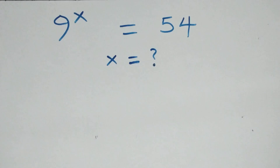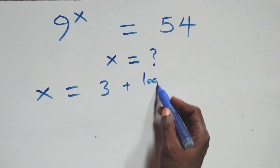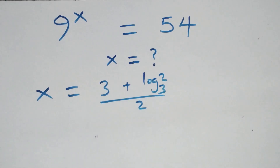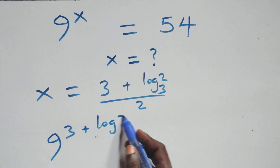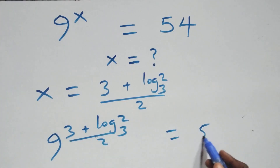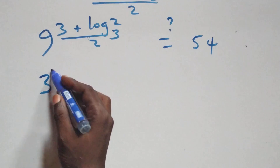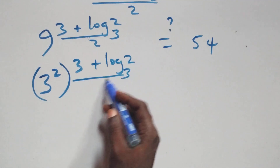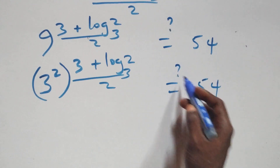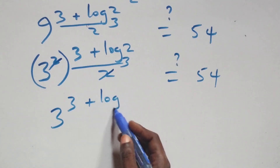The value of x is 3 plus log 2 base 3, all over 2. Then what we have becomes 9 raised to the power of (3 plus log 2 base 3) all over 2, and we check if this equals 54. We can rewrite as 3 squared raised to that power, giving 3 raised to power (3 plus log 2 base 3) all over 2, and the squared and the over-2 cancel each other, leaving 3 raised to power (3 plus log 2 base 3).